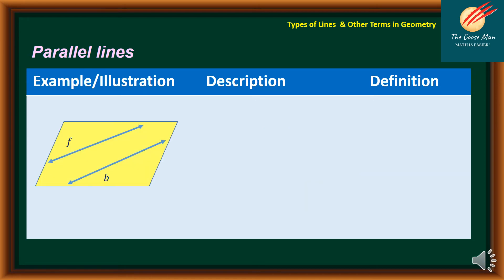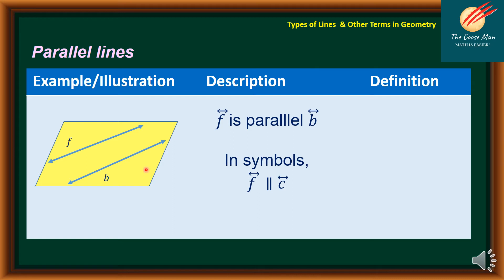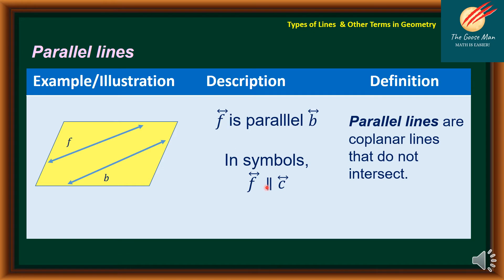The next one is parallel lines. Based on our illustration on the left side, line F is parallel to line B because they are lying on the same plane. In symbols, line F is parallel to line C. Parallel lines are coplanar lines that do not intersect.